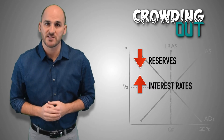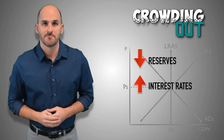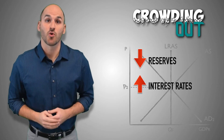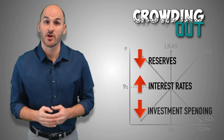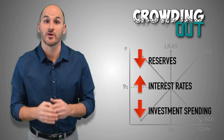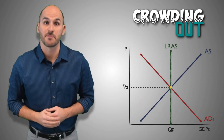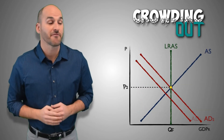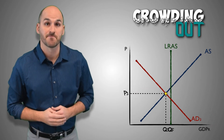This means loans are more expensive for firms and consumers. Ultimately, firms will reduce the quantity of loans that they take out and reduce their investment spending in order to avoid higher interest rates, causing investment spending to decrease and reducing the effectiveness of the initial expansionary fiscal policy.